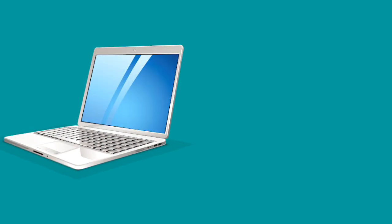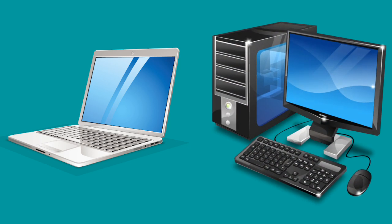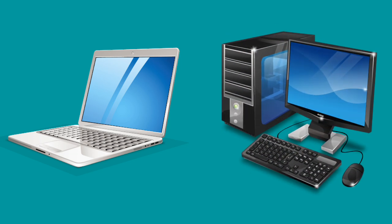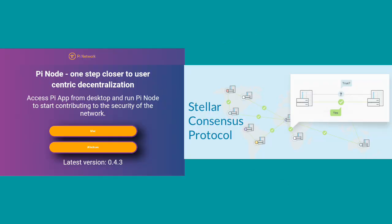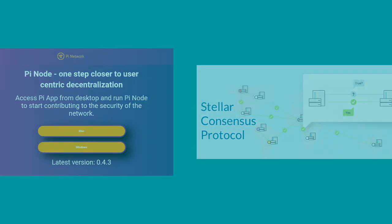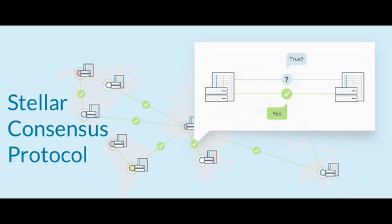A basic laptop or computer desktop within the last five years can handle the requirements necessary to host a PI node. The PI node software will run the Stellar Consensus Protocol algorithm and Federated Byzantine Agreement, and it will take into account the trust graph information that is provided by contributors.